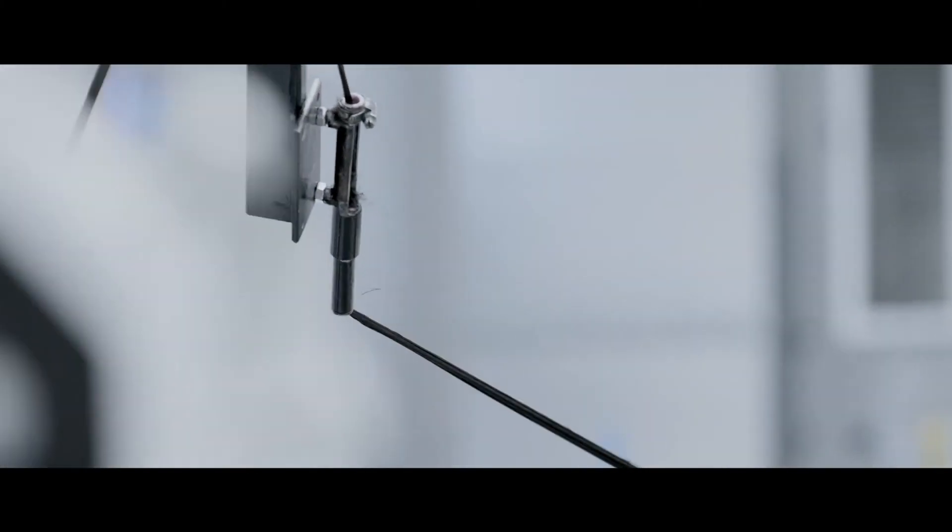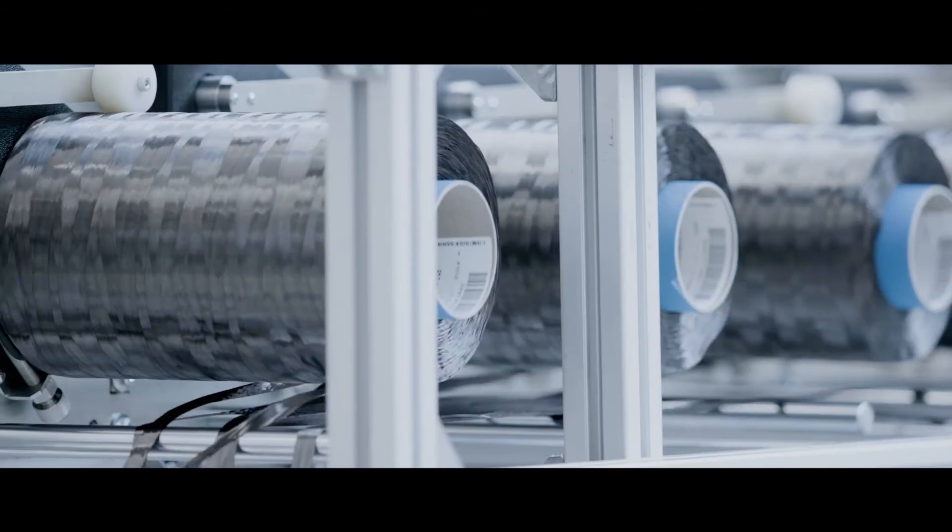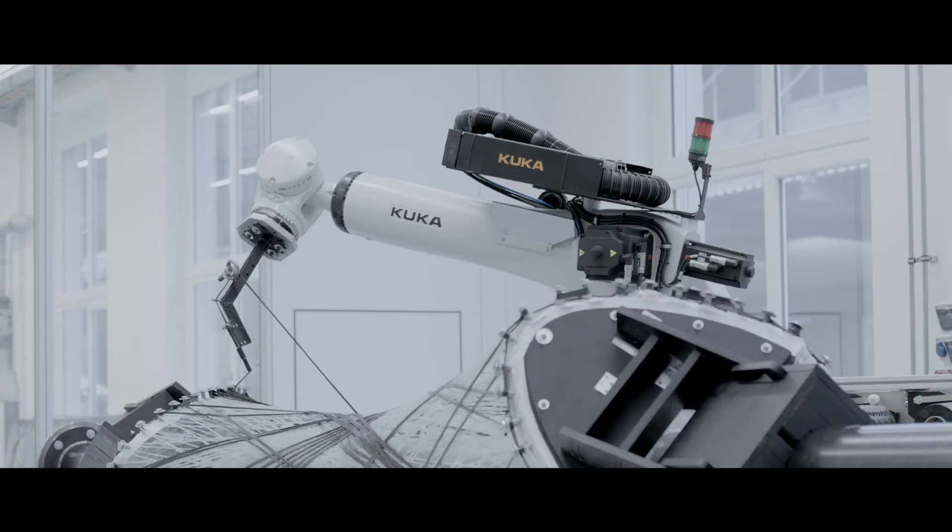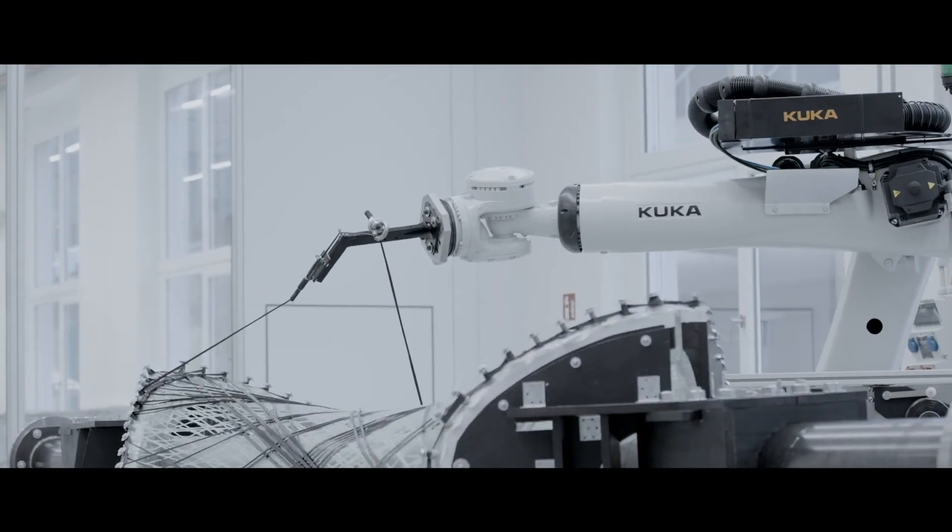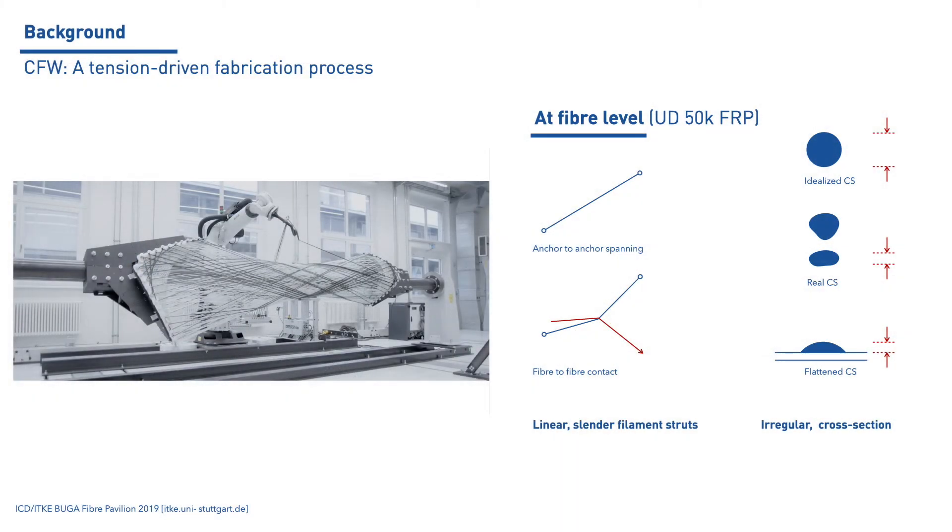Coley's filament winding is essentially a tension-driven process. The fiber rovings are unrolled, pulled through the resin bath, wound around the anchor points, and consolidated in a process that constantly pulls the fibers. At fiber level, tension shapes the fiber rovings to be a linear and slender element when spanning between anchor points or contact points.